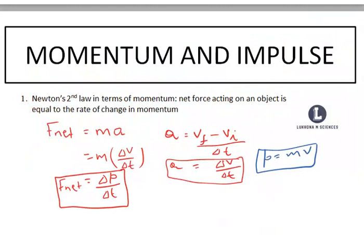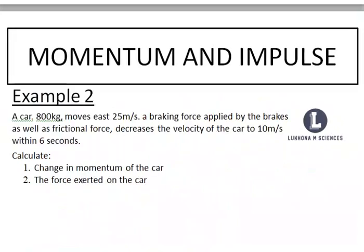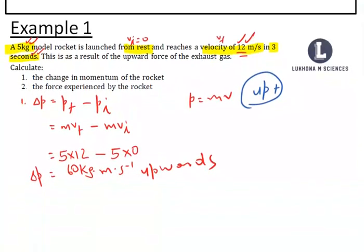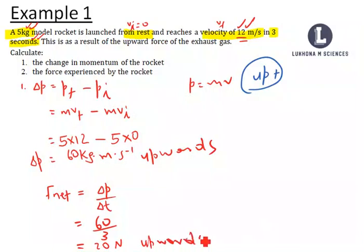The following question asks us to calculate the force experienced by the rocket using Newton's second law in terms of momentum: F net = change in momentum over time. The change in momentum is 60 kg·m/s and the time is 3 seconds, so the net force equals 60 ÷ 3 = 20 newtons upward. That is example number one.